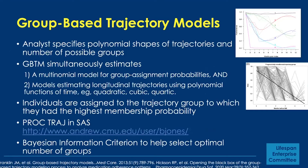Moving on to group-based trajectory models. In this approach, analysts specify polynomial shapes of trajectories and the number of possible groups. These methods simultaneously estimate a multinomial model for group assignment probabilities, and then models estimating longitudinal trajectories using polynomial functions of time — like a cubic function, for example. Individuals are assigned to the trajectory group in which they have the highest membership probability, and this can be implemented with PROC TRAJ in SAS.